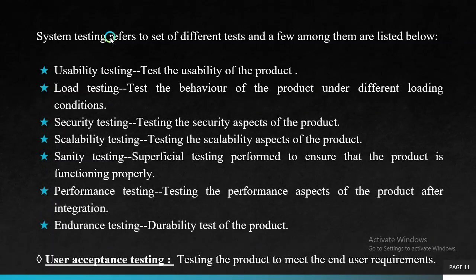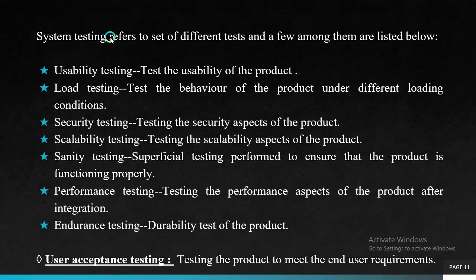System testing refers to a set of different tests, including: usability testing — testing the usability of the product; load testing — testing the behavior of the product under different loading conditions; security testing — testing the security aspects; scalability testing — testing the scalability aspects; sanity testing — superficial testing to ensure the product is functioning properly; performance testing — testing the performance aspects; endurance testing — testing the durability of the product; and user acceptance testing — testing the product to meet end user requirements. This is one of the important questions asked in the university exam.